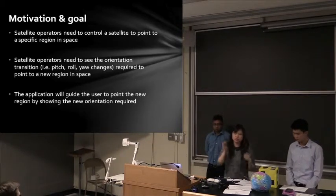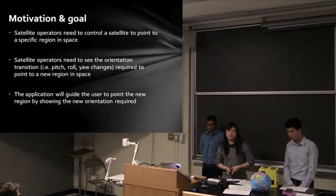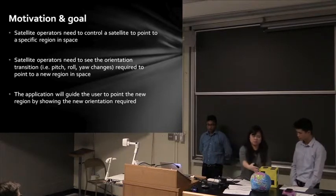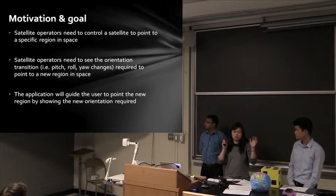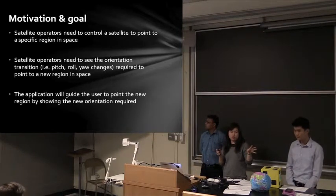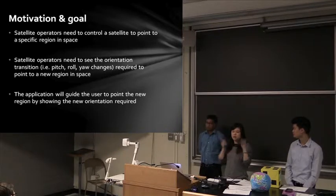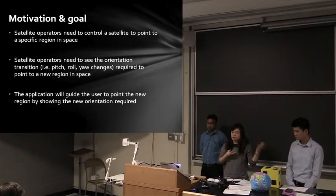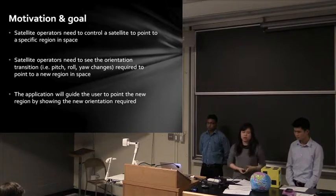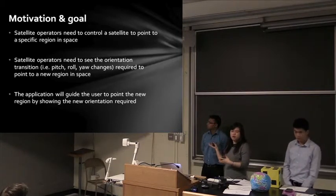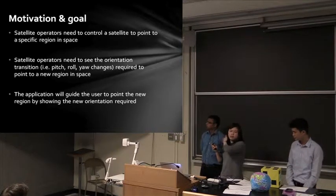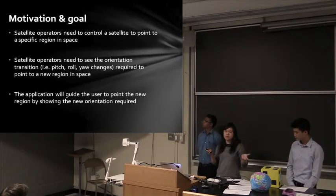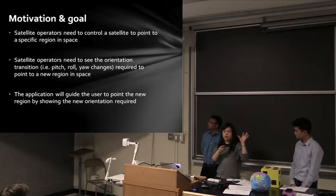To perform multiple target observations, we have to change the orientation of the satellite. Those orientation change requirements are based on a time and space coordinate system that satellite operators use — and all that math is behind this app. The main motivation of this app is to visualize the transition path the satellite takes when pointing to a new region in space.